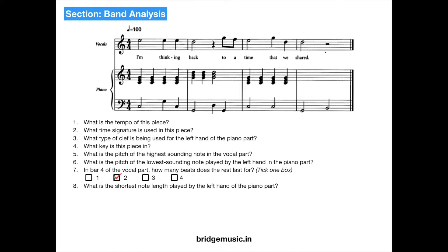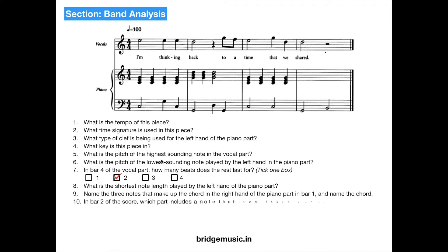What is the shortest note length played by the left hand of the piano part? It is using only 2 note values: the half note and the quarter note. So the shortest note length used is a quarter note. Name the 3 notes that make up the chord in the right hand of the piano part in bar 1, and name the chord. The 3 notes are C, E, and G, and the chord they make is C major, which is the tonic chord in this key.